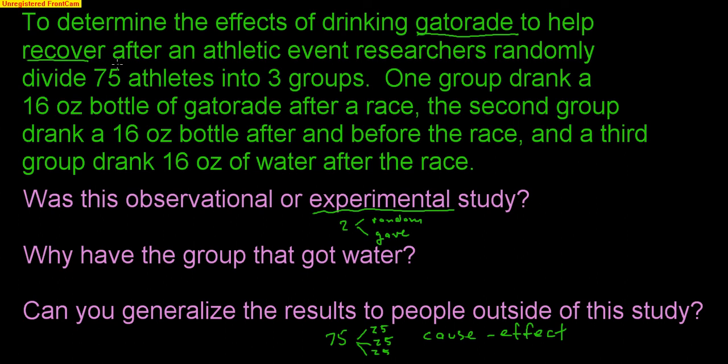However, if these 75 people were only volunteers, because they had to volunteer for this, I couldn't make people participate in this study, then I probably cannot generalize results to people outside this study. If those 75 people were truly randomly taken from the population, they didn't have a choice, I randomly picked them, and then I did the random assignment, then I could show cause and effect and I could generalize to all people.